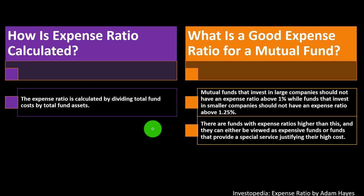Larger companies tend to be more established, while smaller company funds may involve more risk and potentially more active management to navigate that space. There are funds with expense ratios higher than these benchmarks, and they can either be viewed as expensive funds or as funds that provide a special service justifying their high costs.